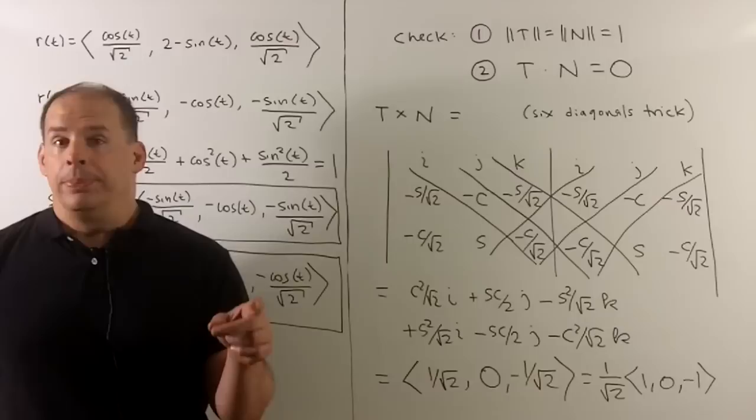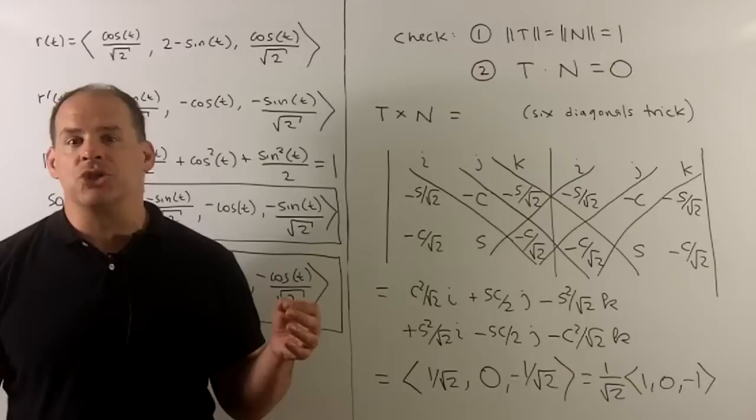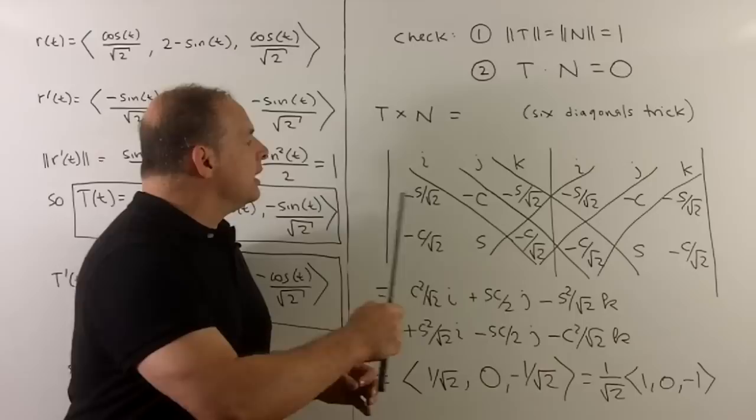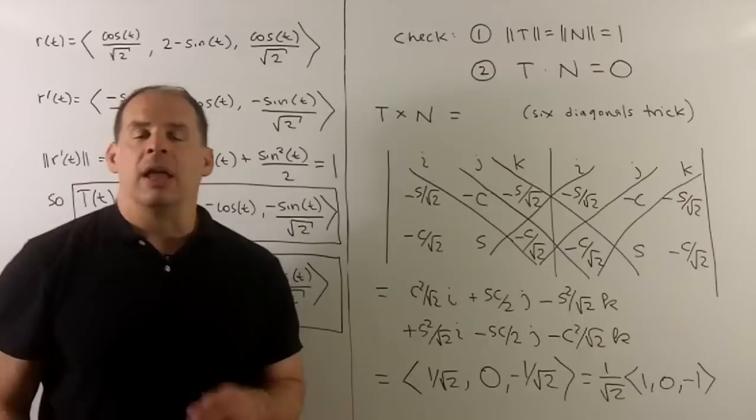For the binormal, we'll take the cross of T and N. The way I'll do it here is using the six diagonals trick. So we'll load into the top row i, j, k. Second row we'll put T, third row we'll put N. I put this matrix next to itself, and then I'm going to multiply along the diagonals.